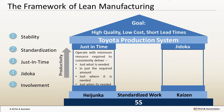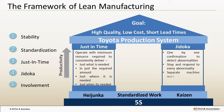In Jidoka, the process of production is designed such that there is one-by-one confirmation to detect abnormalities, stop and respond to every abnormality, separate machine work from human work, and mistake proofing. All these need to be done through the involvement of people with good processes and with the optimal technology used.